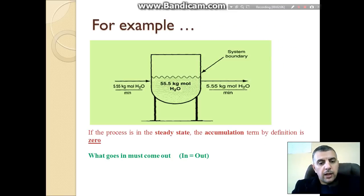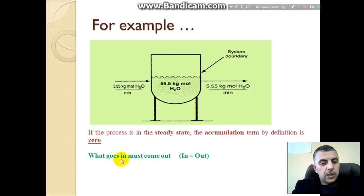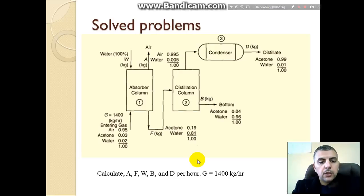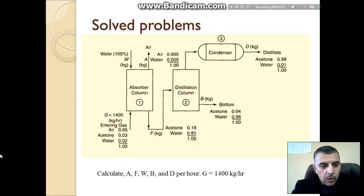For example, the amount of water input to the system equals the amount of water out. This means there is no accumulation — accumulation equals zero. What goes into the system must come out; input equals output.